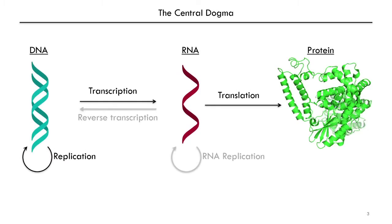Coming back to the core idea of the central dogma, we see that a protein is produced through the translation of an RNA sequence, which itself is transcribed from DNA. We've already discussed DNA replication and transcription of DNA sequence into RNA, but before we get into the details of translation, we're going to revisit some of the basics of protein biochemistry.